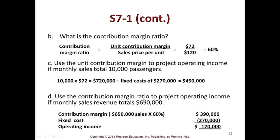Now it asks to use the contribution margin ratio to project operating income if monthly sales are $650,000. You take $650,000 in sales times the 60% contribution margin ratio to get contribution margin, less fixed cost, equals operating income. These are tools to show managers without having to make them accountants. You lay these kinds of things out on a monthly or quarterly basis and they can see the trends without needing to understand and be an accountant.